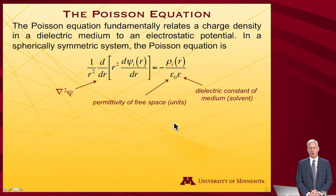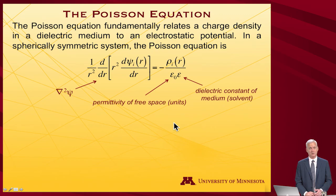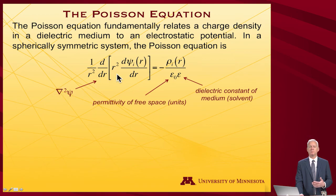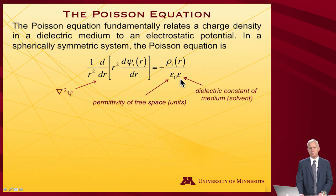To make further progress, we need to know about the potential appearing in the summation. The Poisson equation is a fundamental equation of physics relating the electrostatic potential to charge. In spherical coordinates it reads: 1 over r squared times d/dr of r squared times d(psi)/dr, equal to minus the charge density divided by the permittivity of free space times the dielectric constant of the medium.